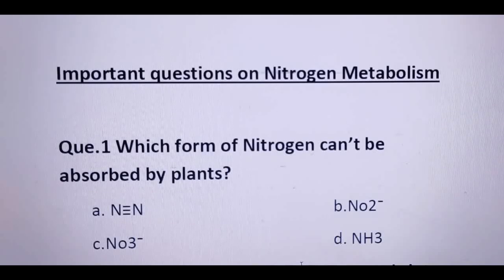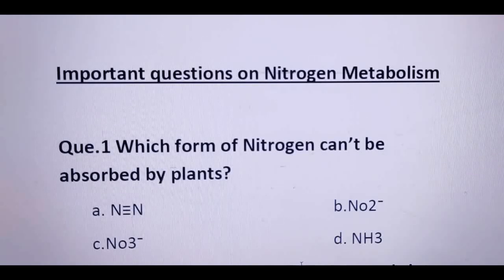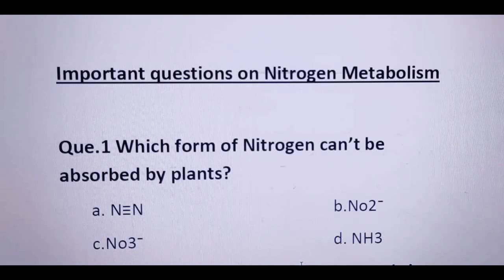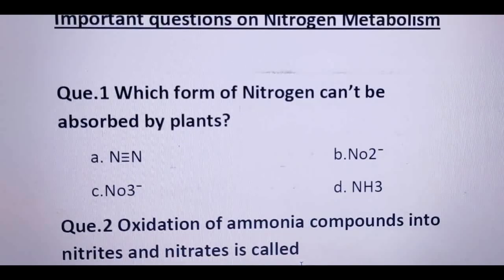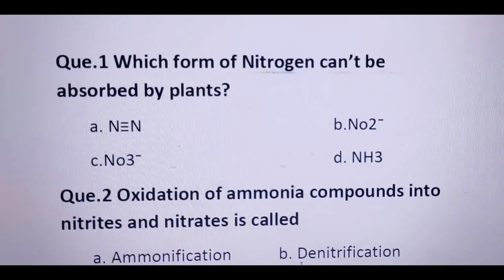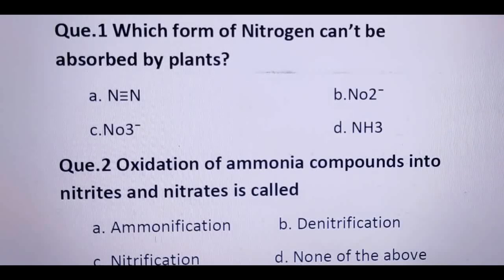Hello everyone. Today's video is about important questions on nitrogen metabolism. We all know that 78% of air is nitrogen, but plants cannot use it directly — they have to fix it first into usable forms. Let's start with our first question: which form of nitrogen cannot be used or absorbed by plants? We have four options: molecular nitrogen, nitrate, nitrite, and ammonia.